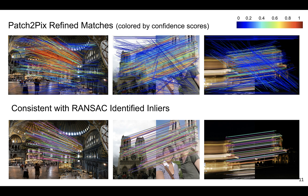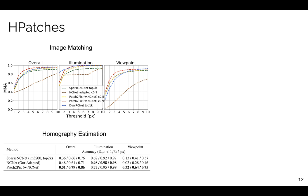We show Patch2Pix learns to identify bad outliers, and the matches assigned with higher confidence are consistent with the inliers kept by RANSAC. Evaluating on HPatches, we show Patch2Pix improves NCNet matches significantly under viewpoint changes and outperforms SparseNCNet.